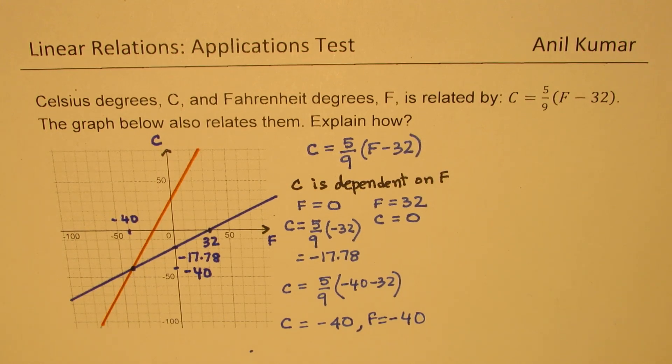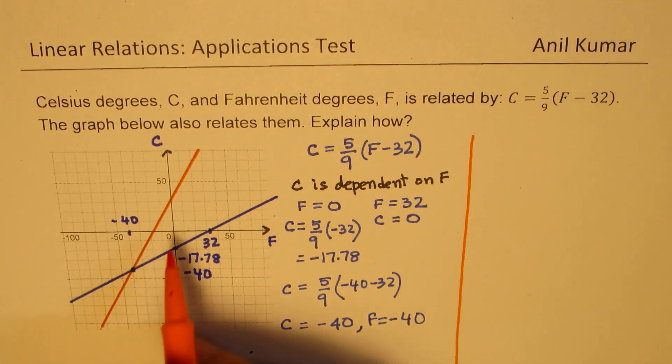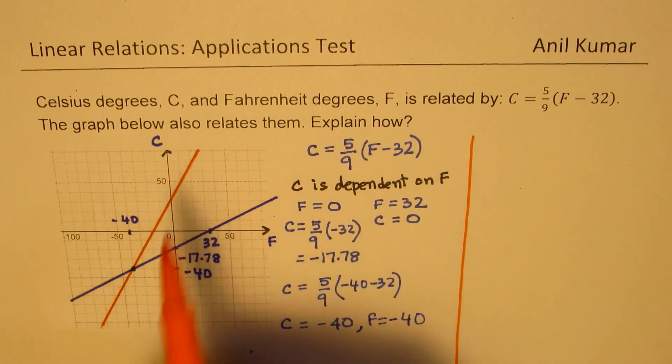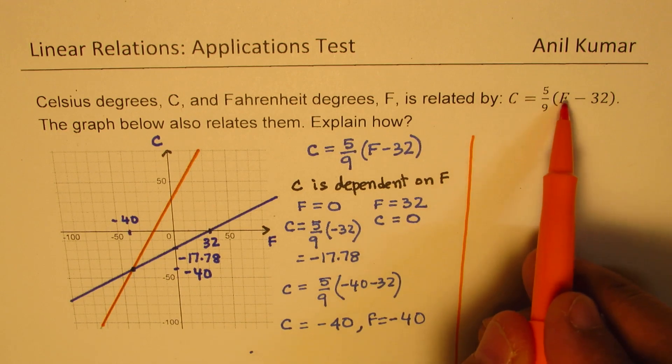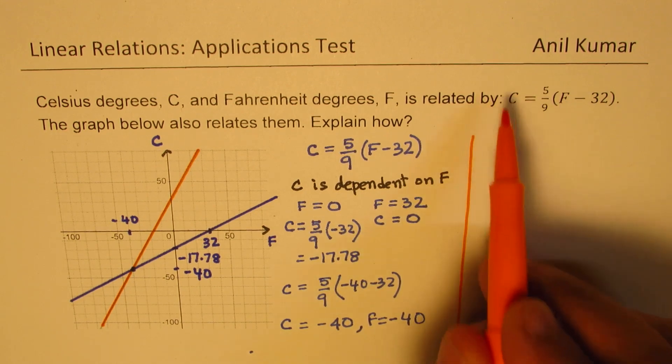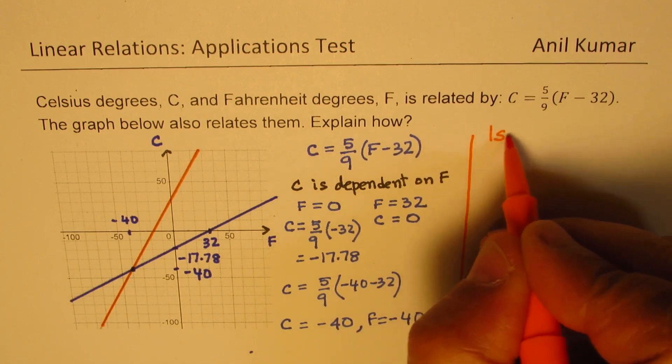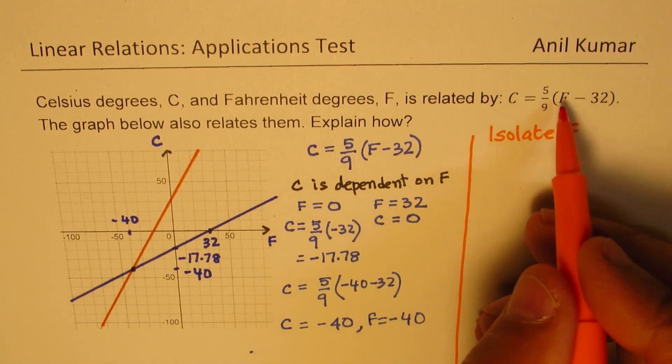If you want to look into the other graph, how do we get the other graph? This particular graph is actually relating Fahrenheit with C. If I have to find what Fahrenheit is, then I have to rearrange this particular equation.